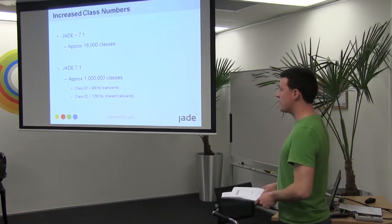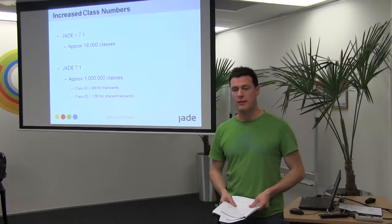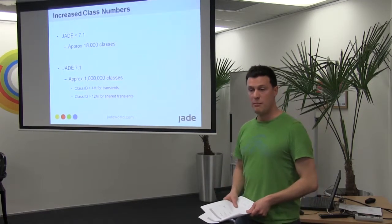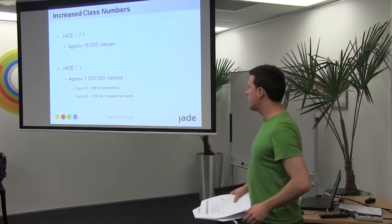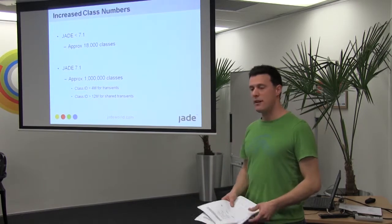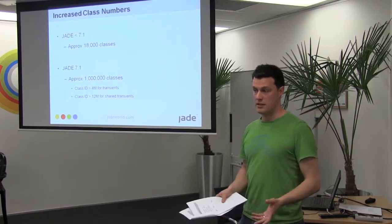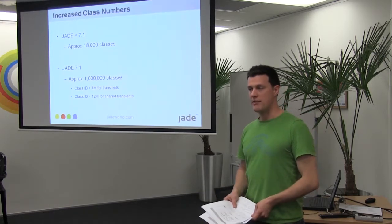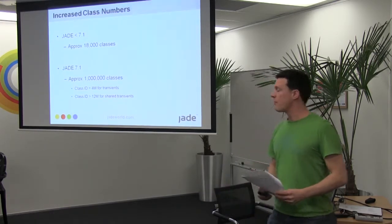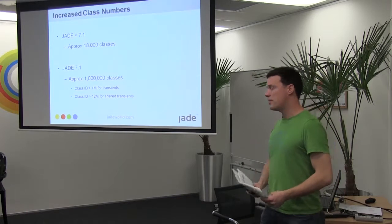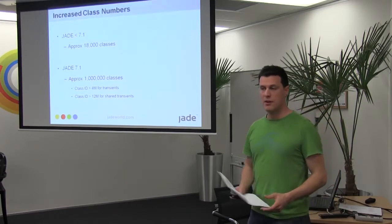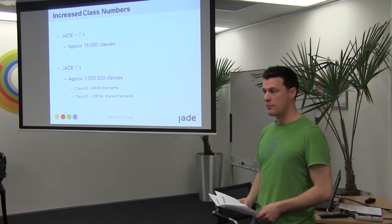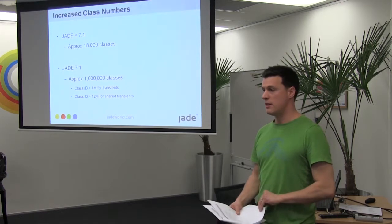You're all developers — you would have seen class IDs being displayed in the IDE before. Any class number you see under a million is going to be essentially your class. There is a small range for the root schema classes. Anything you see above four million indicates the object is a transient, and anything above 12 million indicates the object is a shared transient.